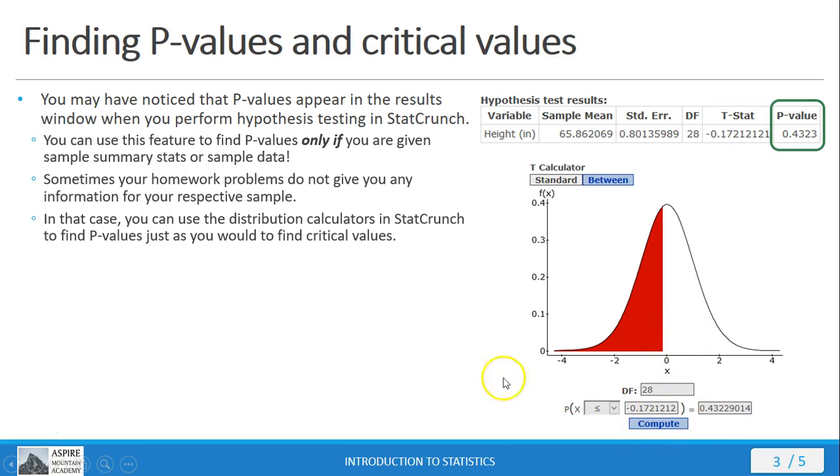I put one in, I get the other out. So, you can use your distribution calculators in StatCrunch to find p-values the same way that we're working with critical values and the significance level alpha. Because,